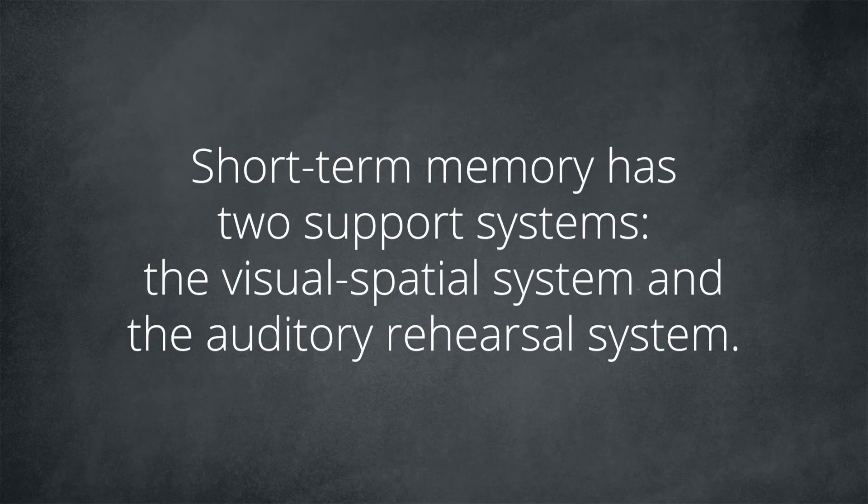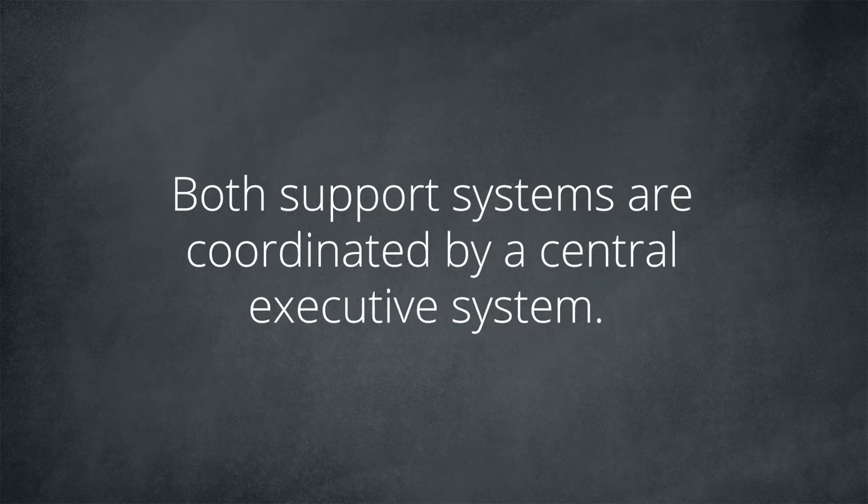Short-term memory has two support systems, the visual-spatial system and the auditory-rehearsal system. Both support systems are coordinated by a central system. Depending on the type of information you receive, short-term memory uses a support system, visual-spatial or auditory-rehearsal. Let me explain that. If you receive information by way of a photograph, a chart or a map, this information will be stored in the visual-spatial storage. This is the system that handles visual-spatial information. But if you receive something verbal, like numbers or words, that information will be processed by an auditory-rehearsal filter. Do you know when you keep repeating something so that you don't forget? Well, this is the auditory-rehearsal cycle in action. You received some information verbally, now you are repeating it just so that you don't forget it. When you repeat something, your brain is receiving the same information over and over again. This is a cycle style. You get it? So, if you see something, it is something visual, you are using the visual-spatial storage. If you hear something, you will be using the auditory-rehearsal cycle.